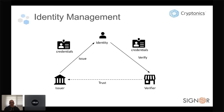Identity is easily explained by a triangle: there's a person, device, or object — some entity that has an identity; there's an issuer of a credential; and there's a verifier of a credential. Someone says something about someone else, and we have to trust that. This simple triangle with these roles never changes in identity management. One of the misunderstandings with self-sovereign identity is that there's still always some trust involved — we always need to believe someone about who issued a credential.